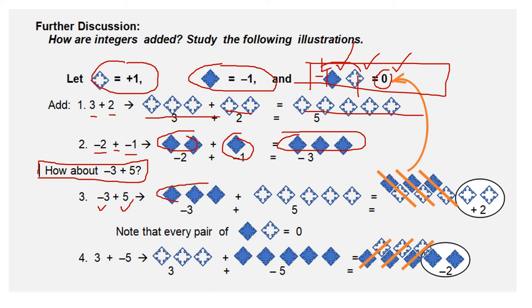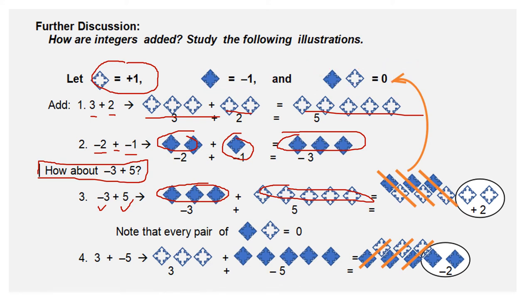First, we draw the tiles, three negative tiles, and then positive five tiles. But remember that I told you that when a negative tile and a positive tile join or combine together, such as this example, they equal zero.